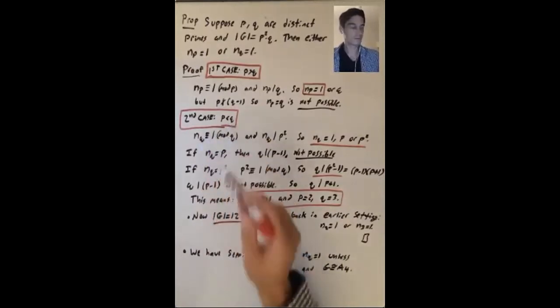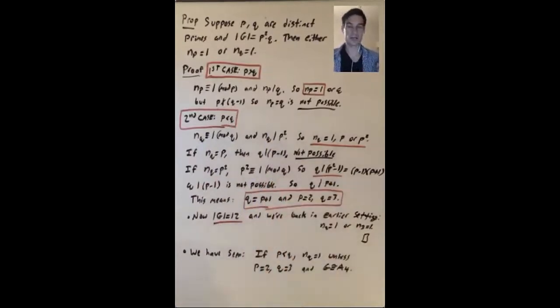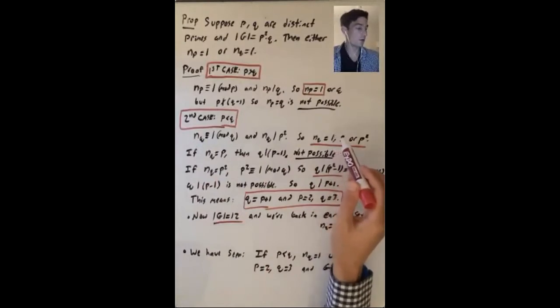So let's look at nq. nq is congruent to 1 mod q, and nq divides p squared. So p is a prime, so nq equals 1 or p or p squared.